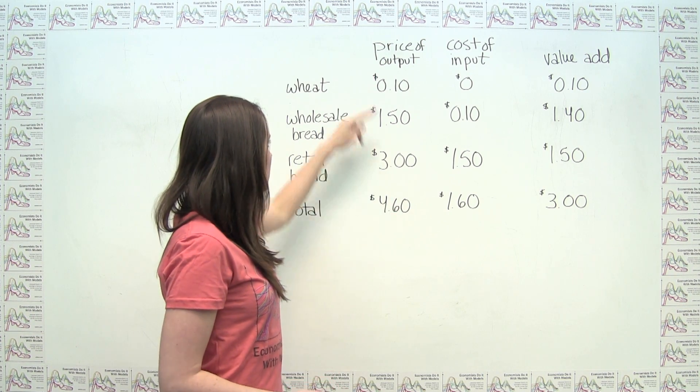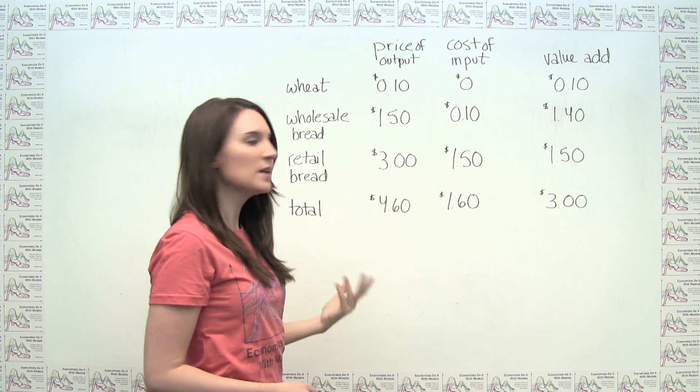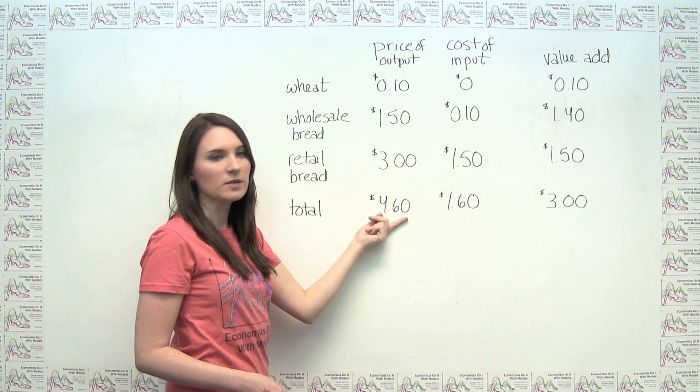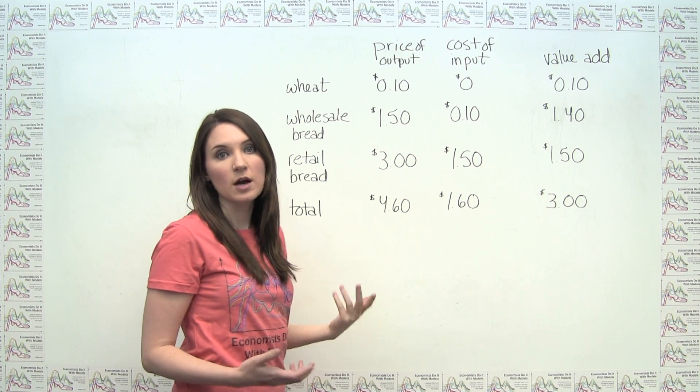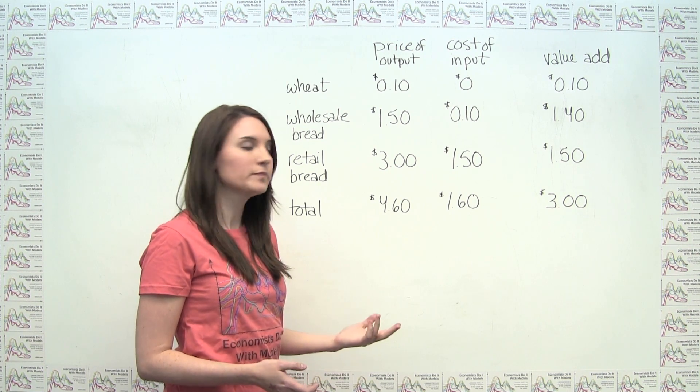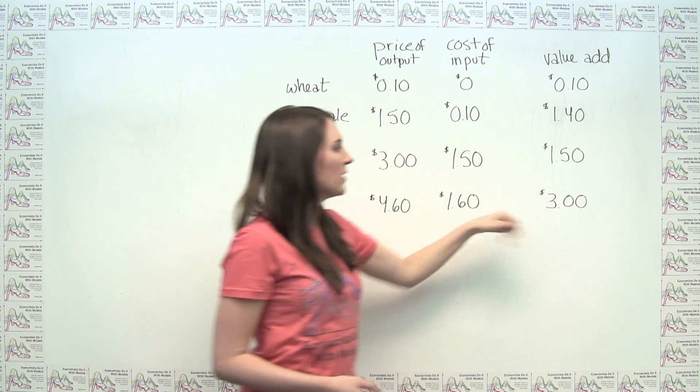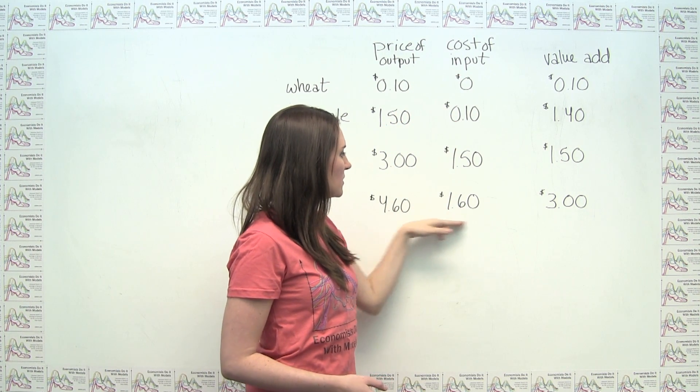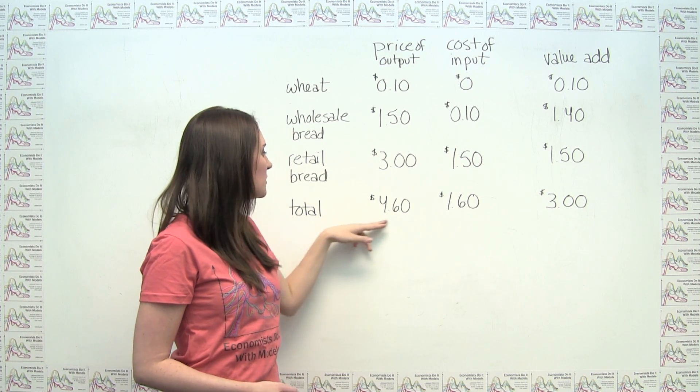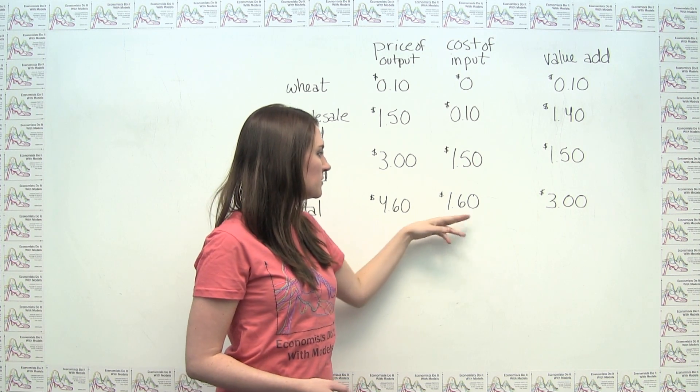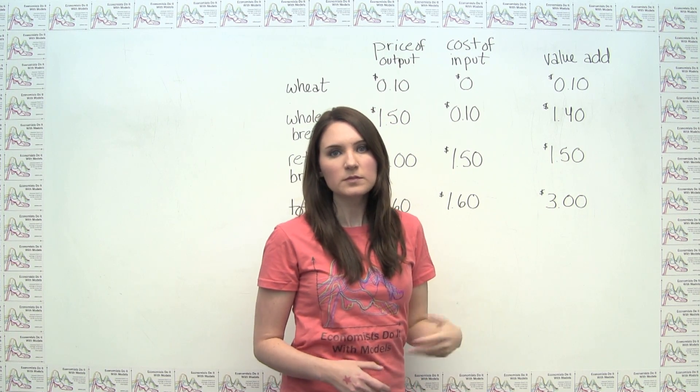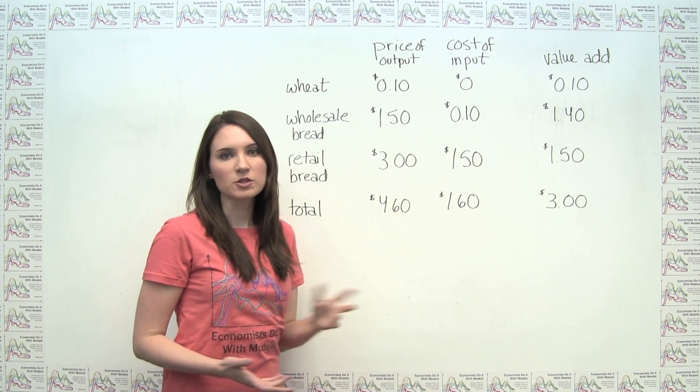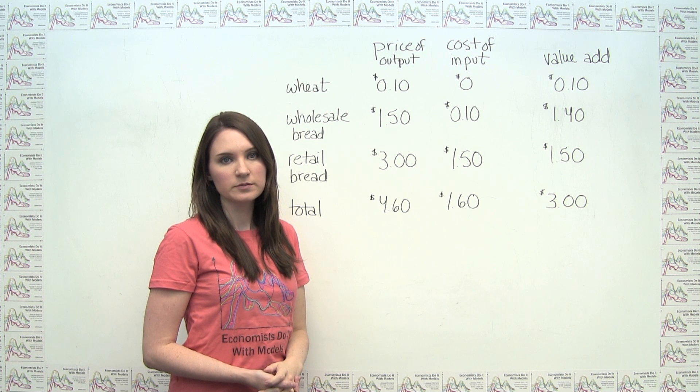It should also become more clear that if we were to just add up the price of the output at each stage, we would be over counting, and we would be counting $4.60 in GDP for an item that ultimately was only priced at $3.00. So this is the double counting that we were talking about earlier. Notice that we could also get the total value add from just adding up the prices of the output and then subtracting off the sum of the cost of the input. Because if we were to take the $4.60 here, subtract off the $1.60, we would again get $3.00. Regardless how we think about it, the appropriate figure to use for this loaf of bread's contribution to GDP is in fact $3.00.